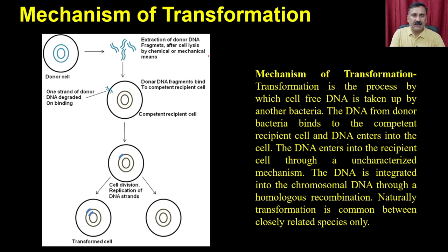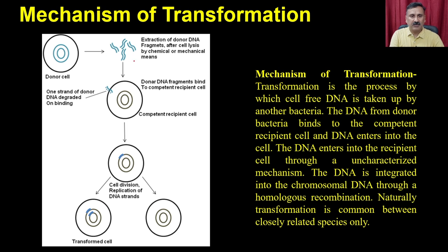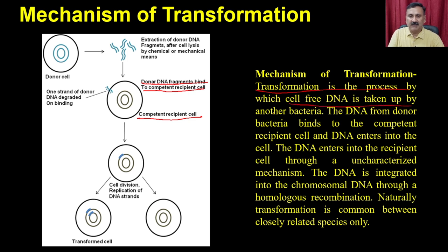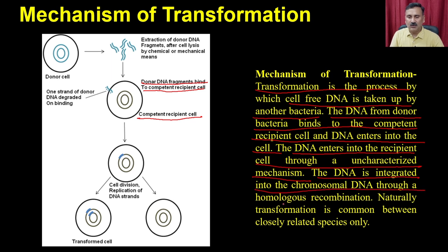The mechanism works as follows: the donor DNA or DNA fragment carrying antibiotic resistance genes or any phenotypic gene is released into the extracellular media. This extracellular DNA interacts with the competent recipient cells. The donor DNA fragment binds to the competent recipient cells and is taken up. DNA enters the recipient cell through an uncharacterized mechanism and is integrated into chromosomal DNA through homologous recombination.